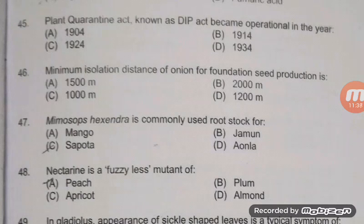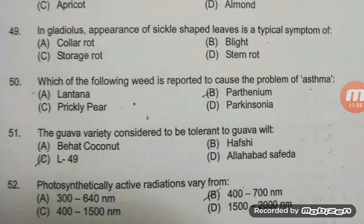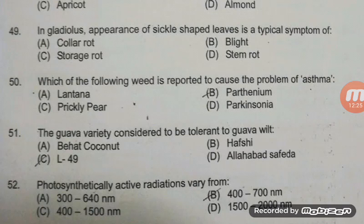I discussed a lot of information regarding nectarine in my previous video on underutilized fruits. In gladiolus, the appearance of sickle-shaped leaves is a typical symptom of — the right answer is A — color rot or wilt, caused by Fusarium oxysporum f. sp. gladioli. Other common diseases in ornamentals include powdery mildew, dieback of rose, Aster yellows caused by MLO and transmitted by leafhoppers, and Dahlia mosaic, also called stunt, a viral disease transmitted by greenfly.